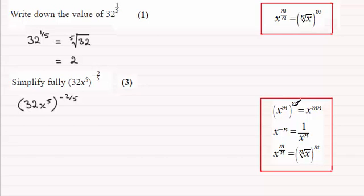The first rule: (x^m)^n equals x^(mn). So we have 32^(-2/5) multiplied by x^5 to the power (-2/5). Multiplying those powers together, 5 times -2/5 gives x^(-2). Those fives cancel.